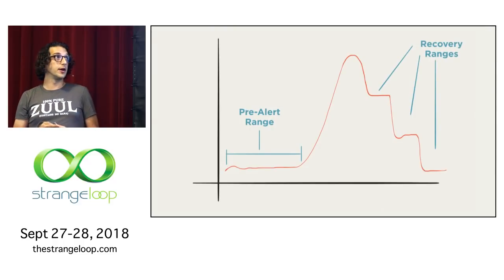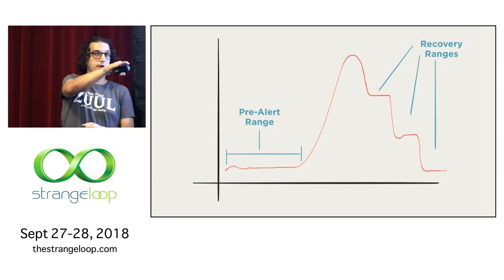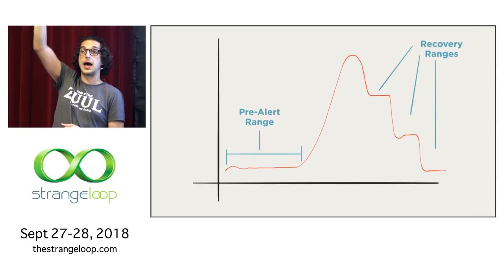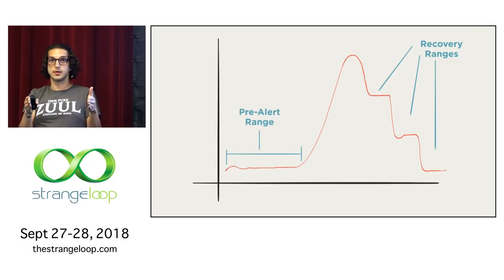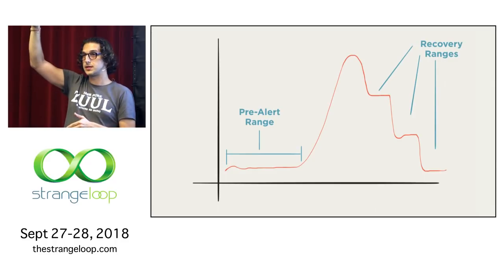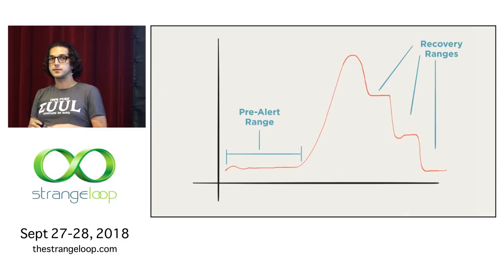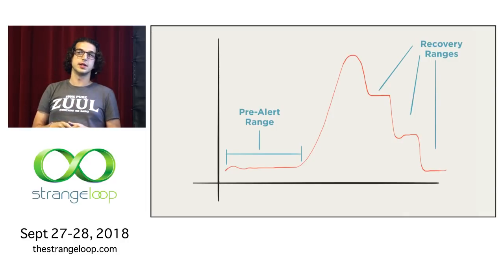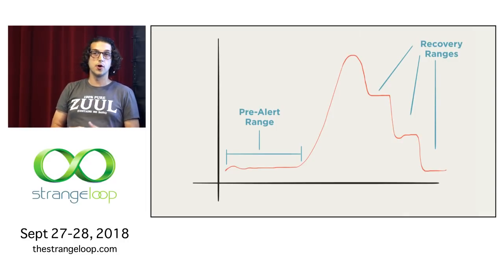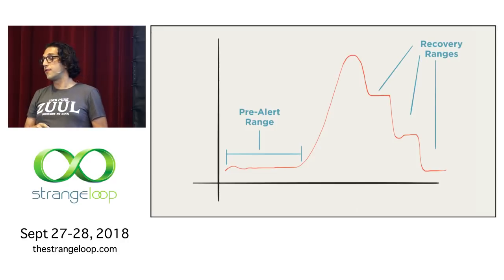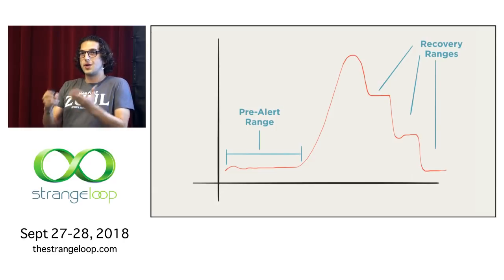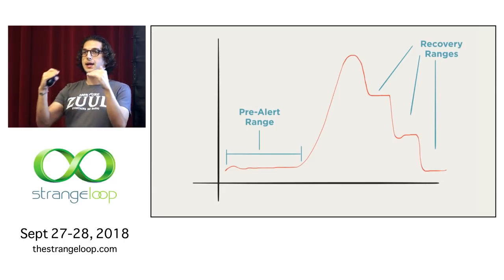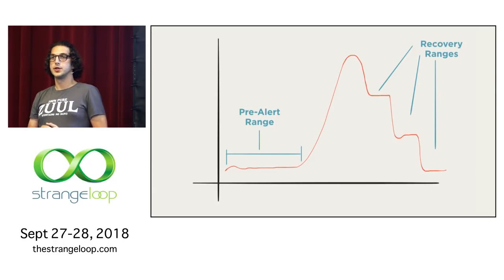On the graph, the error rate is flat, then something happens and it spikes. We have our pre-alert range, then we're anomalous, and it starts tapering off. If you're calculating slope, you might think you've recovered at one of the upper recovery ranges — but in reality, you haven't recovered until you're back to that normal error rate. So it's very effective in that sense.